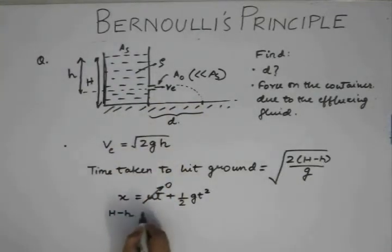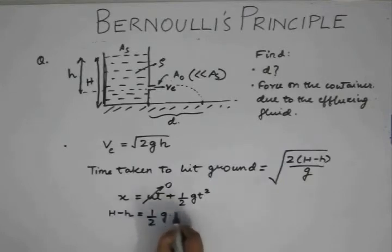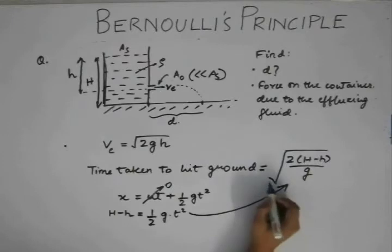The X that is covered is basically capital H minus small h, which is this height. So this is going to be H minus small h. This is equal to half G into T square. This gives us the time.